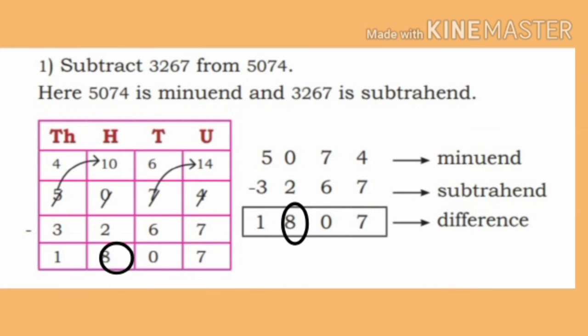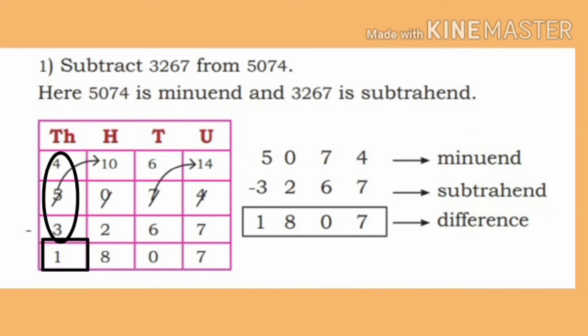Now in the Minuend, 4 remains in the thousands place. On subtracting 3 from 4, 1 remains. Write 1 in the thousands place. Therefore, when 3,267 is subtracted from 5,074, 1,807 remains.